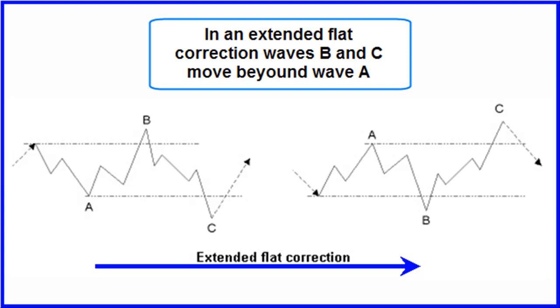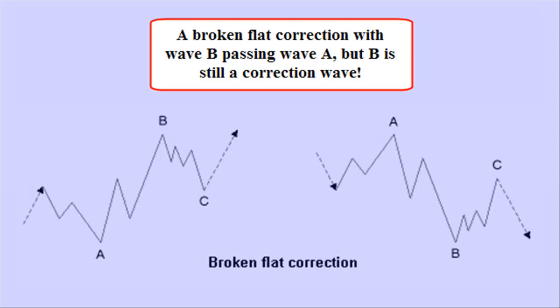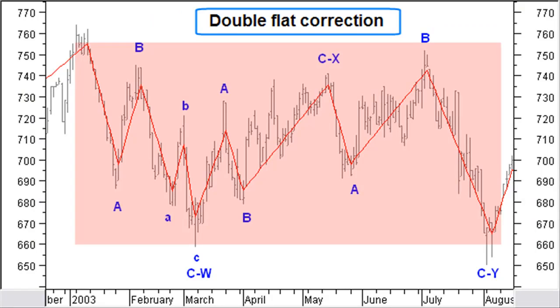Pay attention to an extended flat correction — here waves B and C move past wave A. In a broken flat correction, on the other hand, only wave A is passed by wave B, but wave B is still a correction pattern, not an impulse wave.